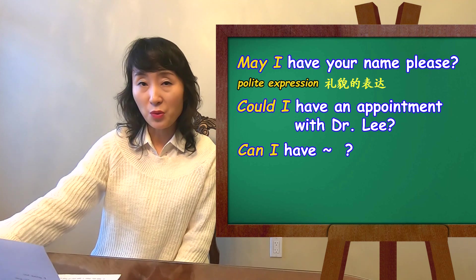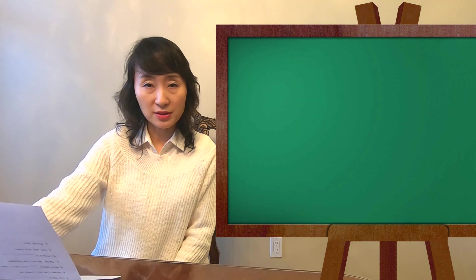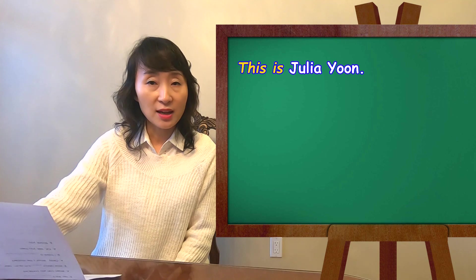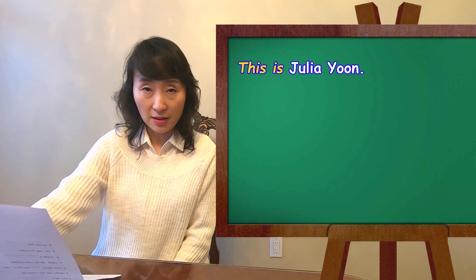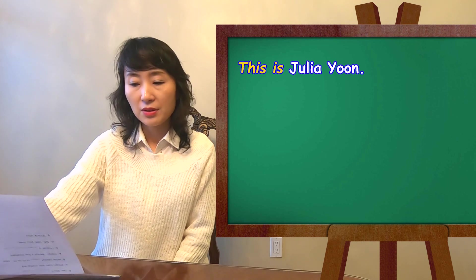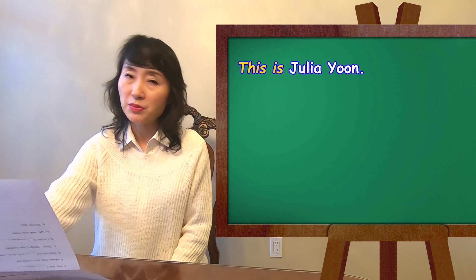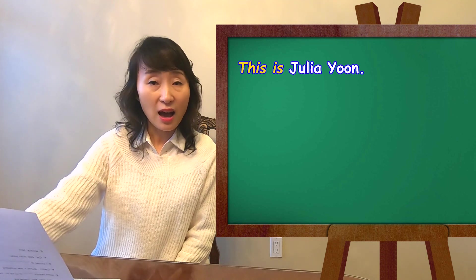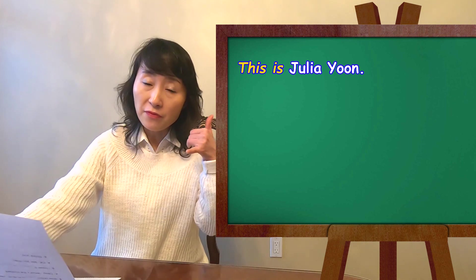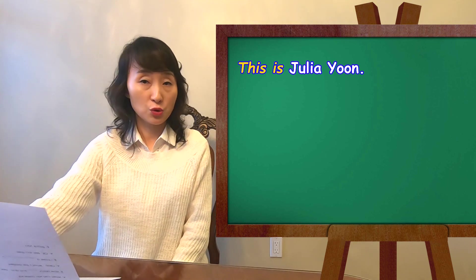On the phone, when you're talking about your name, you can say 'Yes, this is Julia Yoon.' So you say first name, then last name. Some people might ask, can I say 'I am Julia Yoon?' The meaning is the same, but on the phone, people usually say 'This is Julia Yoon.'